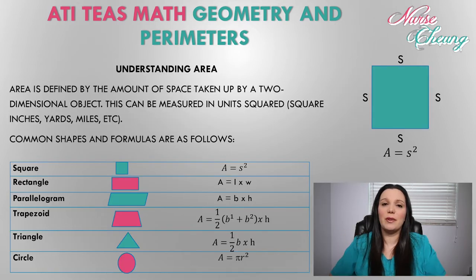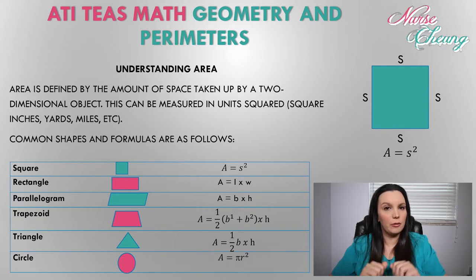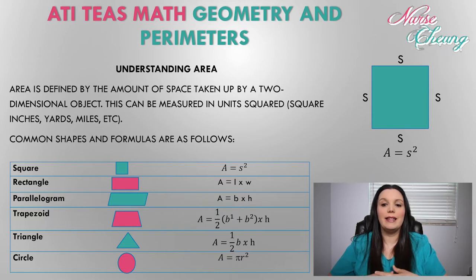In addition to perimeters, the ATIT's will test your knowledge of finding area. Area is defined as the amount of space taken up by a two-dimensional object. We're not looking at three-dimensional objects, we're simply looking at two-dimensional objects. What we see is what we get. This can be measured in units squared, square inches, yards, miles, etc.